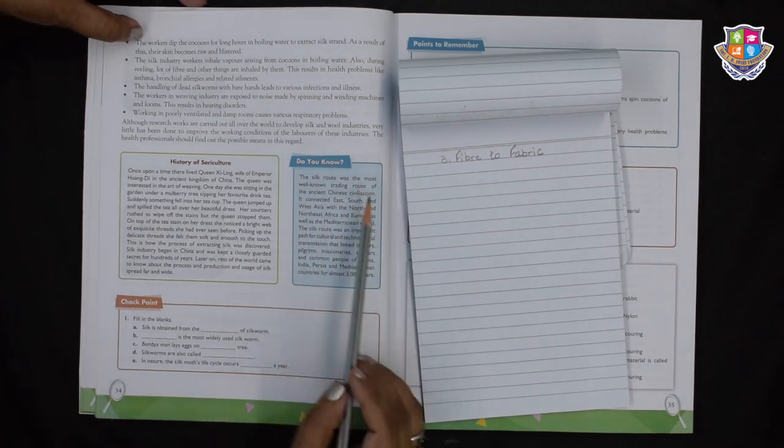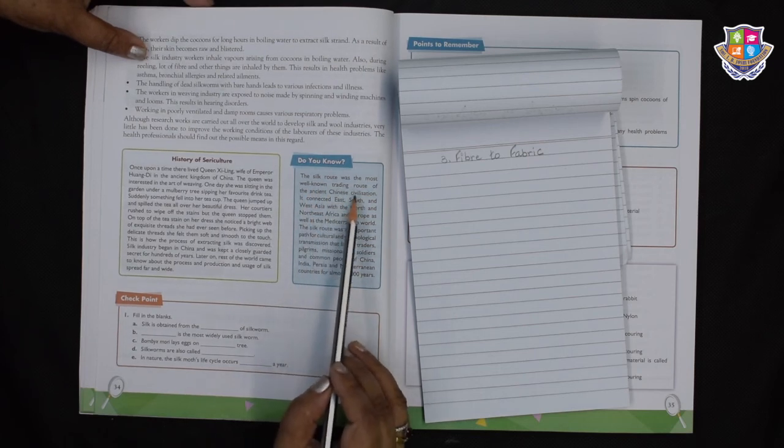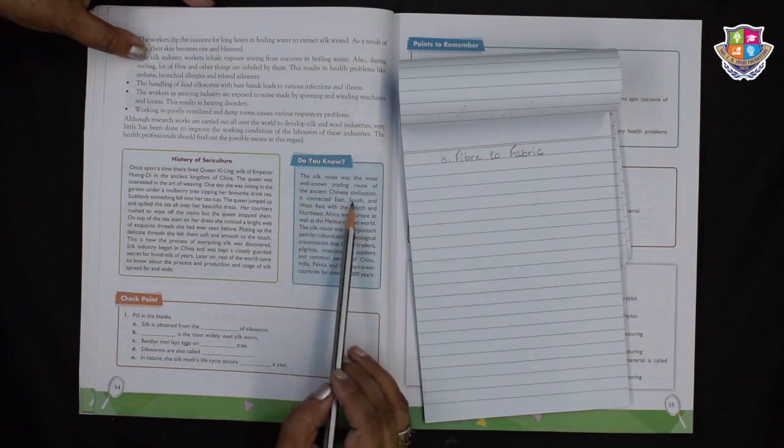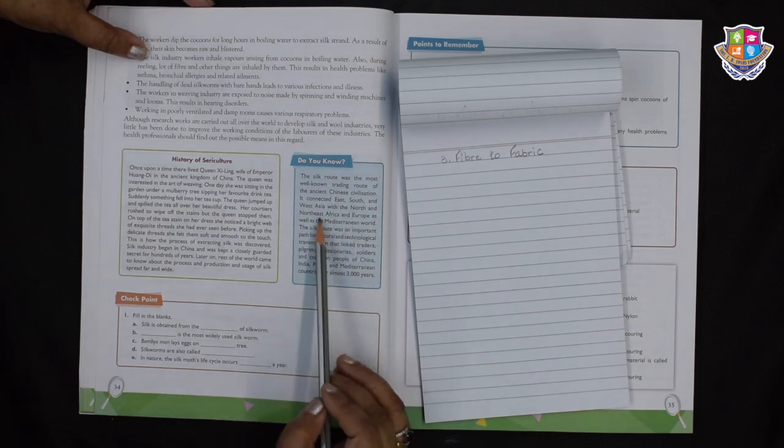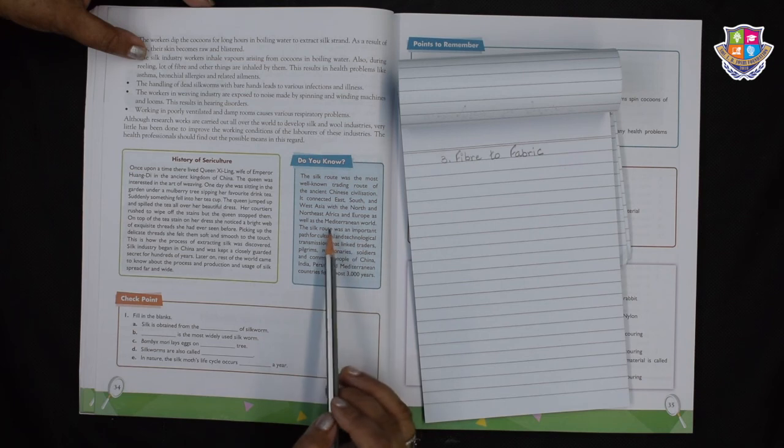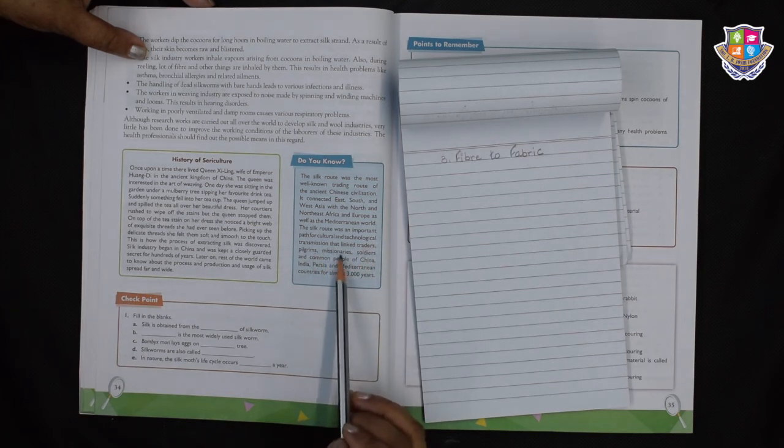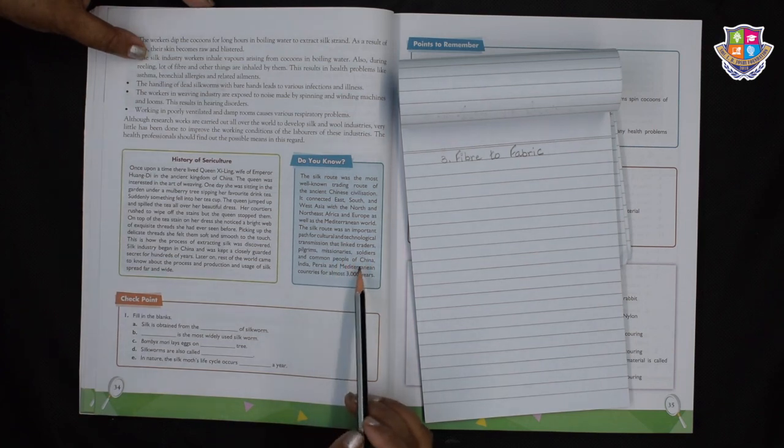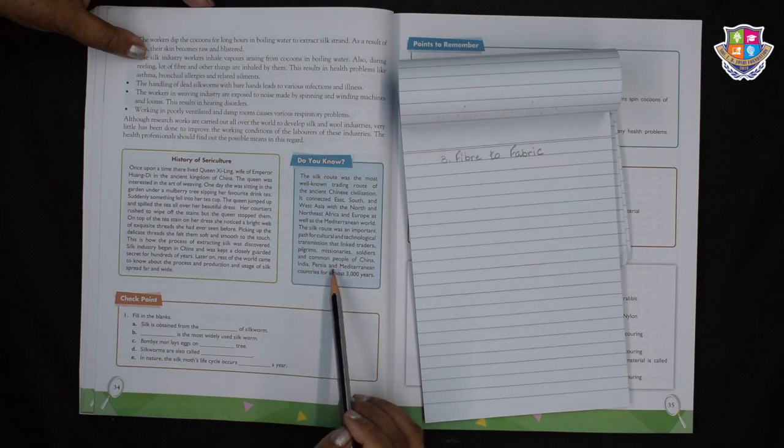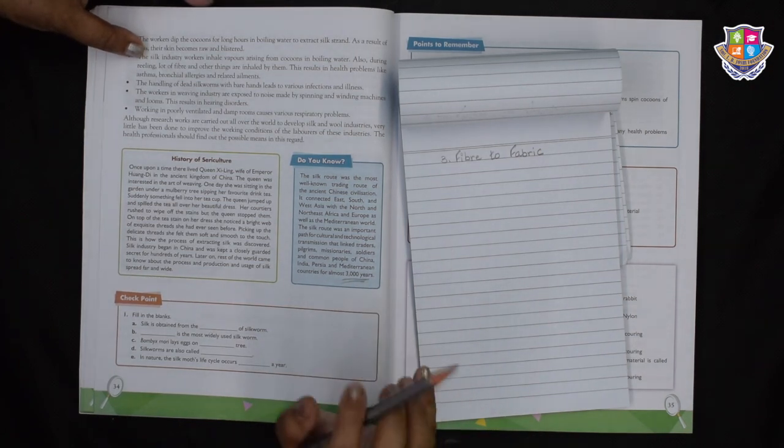Now let's see what this do you know has in store for us. The Silk Route was the most well known trading route of the ancient Chinese civilization. It connected East, South and West Asia with the North and Northeast Africa and Europe, as well as the Mediterranean world. The Silk Route was an important part of cultural and technological transmission that linked traders, pilgrims, missionaries, soldiers and common people of China, India, Persia and Mediterranean countries for almost 3000 years. Children, that was something interesting, wasn't it?